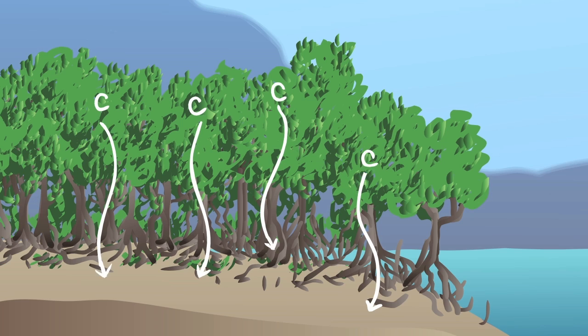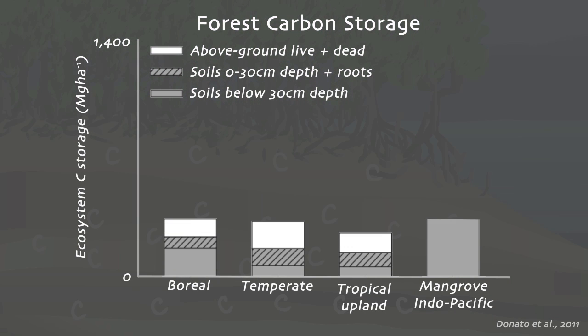Mangroves store vast amounts of carbon in the ground, much more than other types of forests. They are even treated as a commodity in the carbon trading markets.